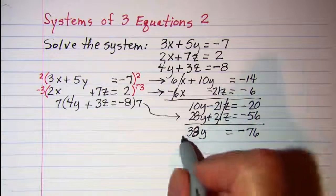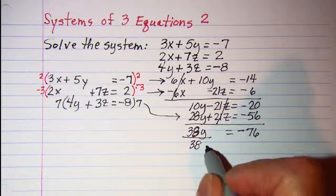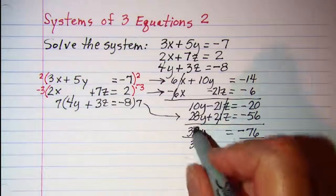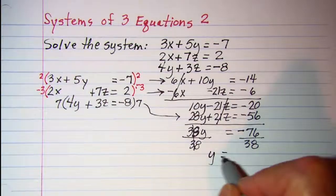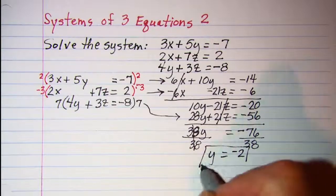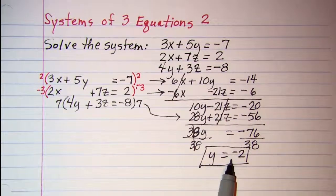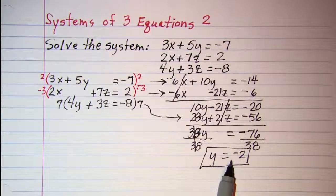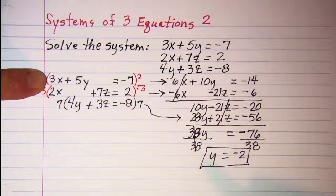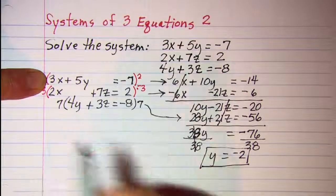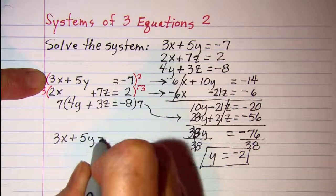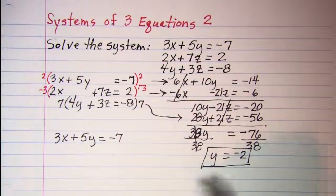Divide both sides by 38, and y = -2. Now I'm going to put y = -2 into this first equation to find x. Copy that equation: 3x + 5y = -7. I'll put -2 in here: 3x + 5(-2) = -7.